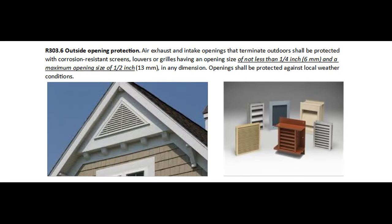R303.6 Outside Opening Protection. Air exhaust and intake openings that terminate outdoors shall be protected with corrosion-resistant screens, louvers, or grills, having an opening size of not less than 1/4 inch and a maximum opening size of 1/2 inch in any dimension. The opening shall be protected against local weather conditions. Outdoor air exhaust and intake openings shall meet the provisions for exterior wall opening protectives, in accordance with this code.